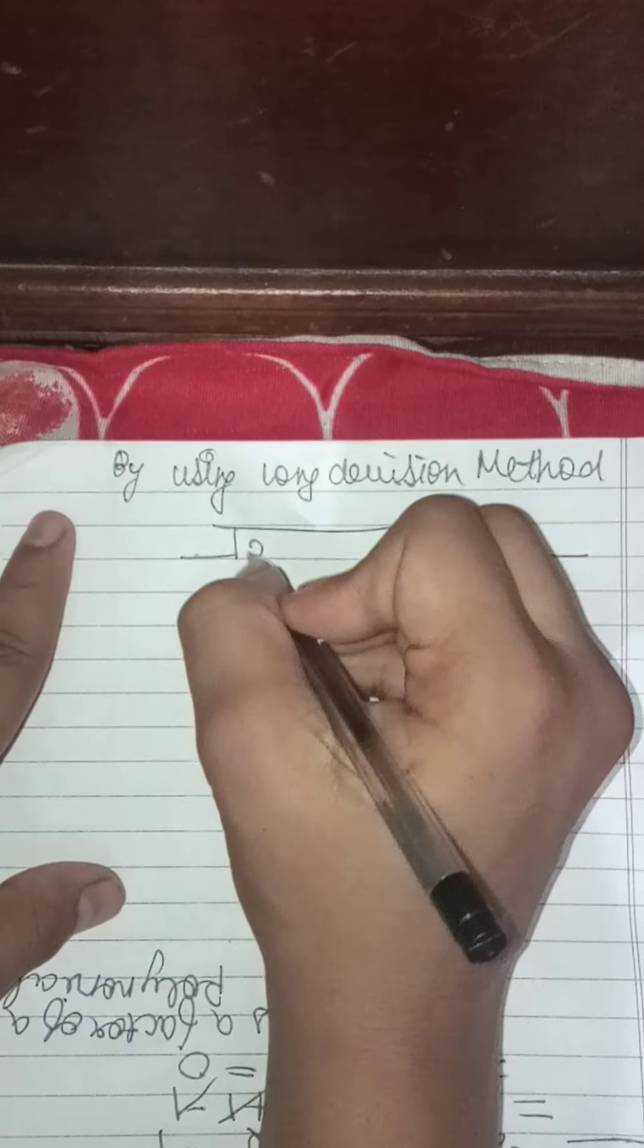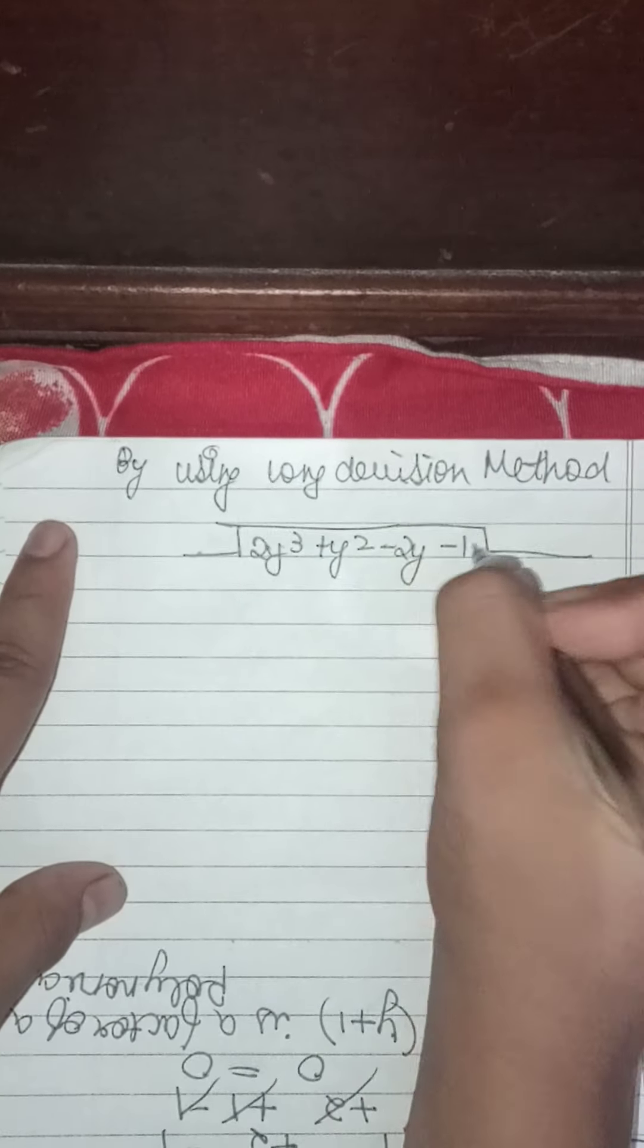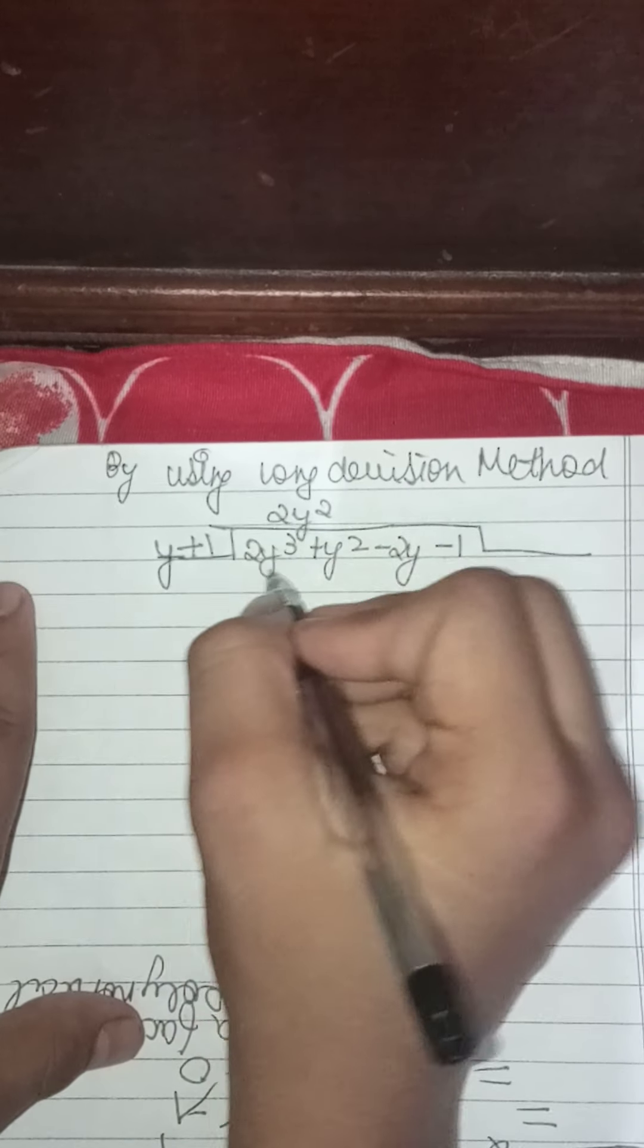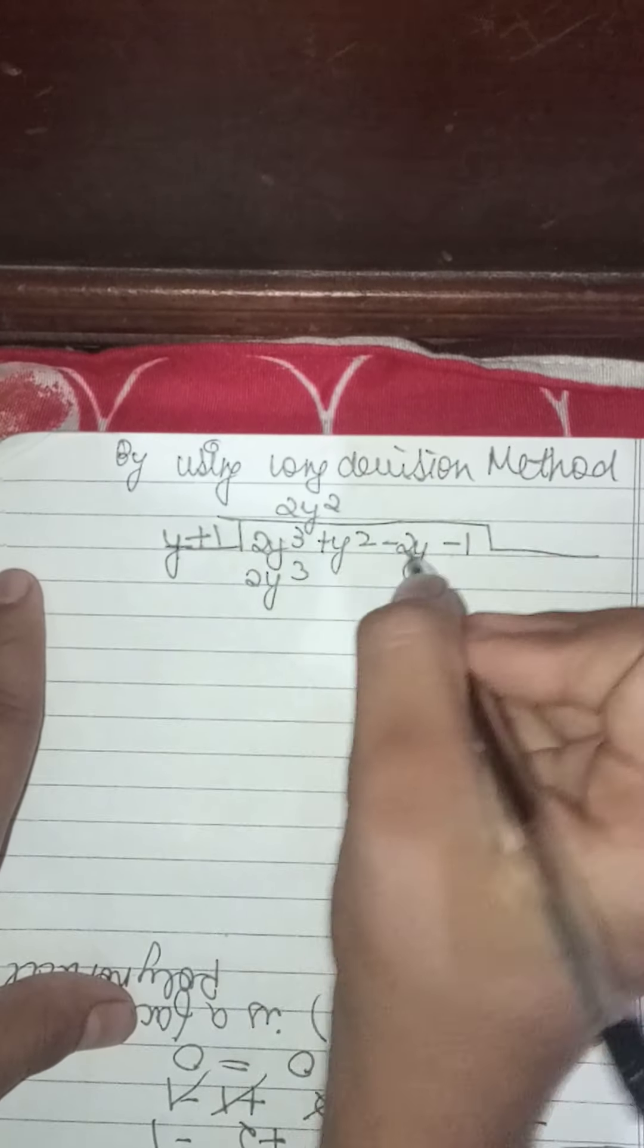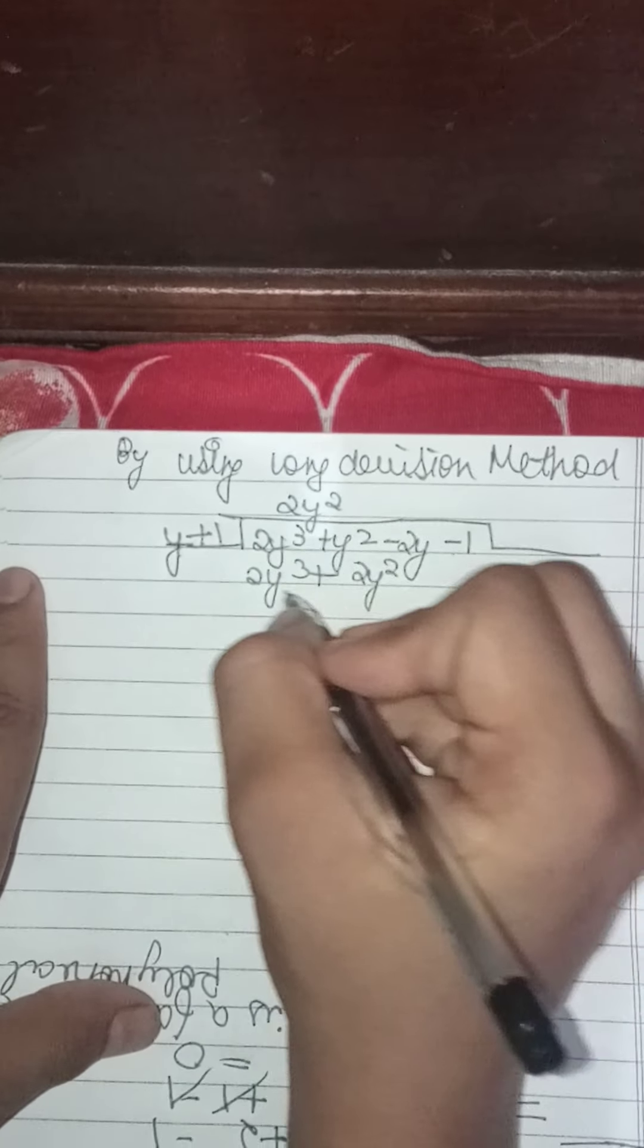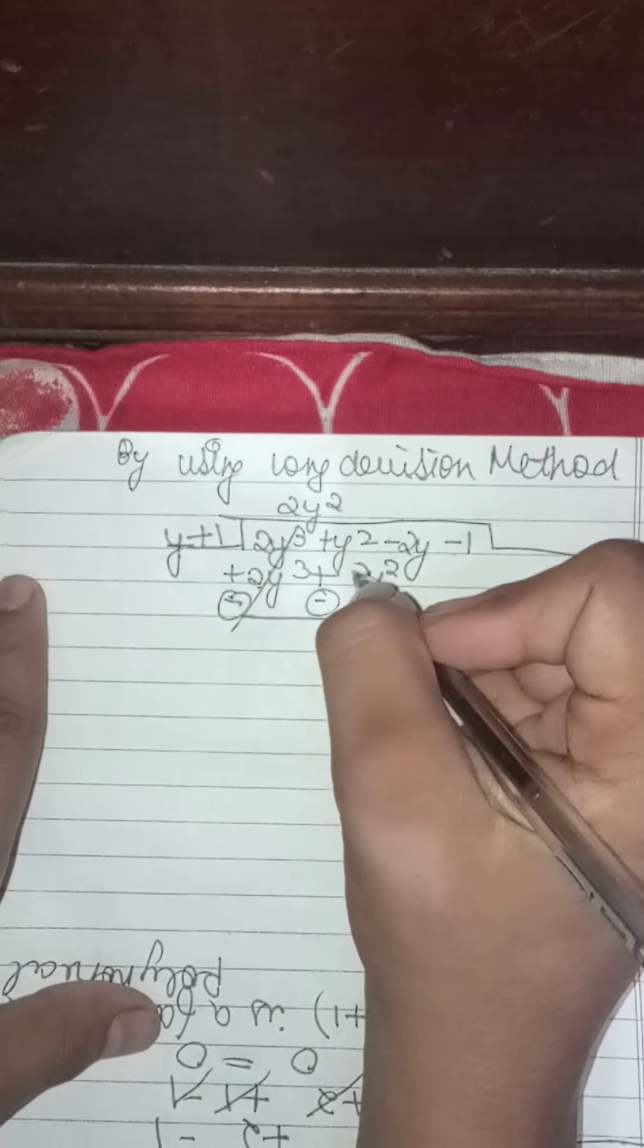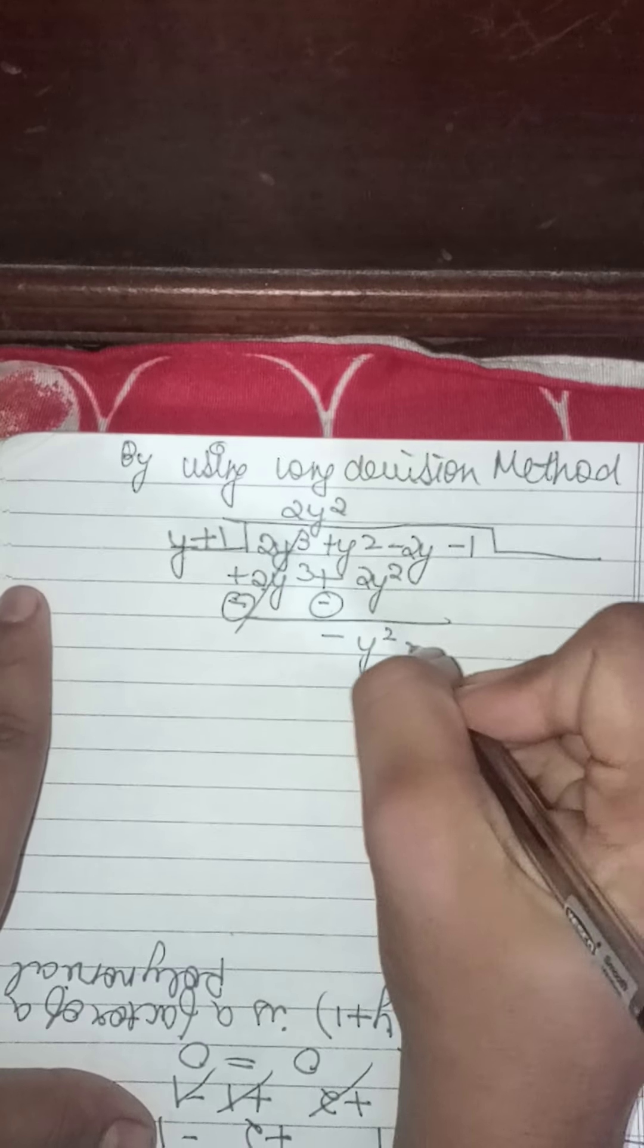2y cube plus y square minus 2y minus 1, we will divide by y plus 1. So 2y square, if we multiply y by 2y square we get 2y cube, and 1 by 2y square gives 2y square. Then sign will be changed, plus becomes minus and plus becomes minus. Minus plus cancel, minus plus minus, 2 minus 1, 1y square minus 2y.